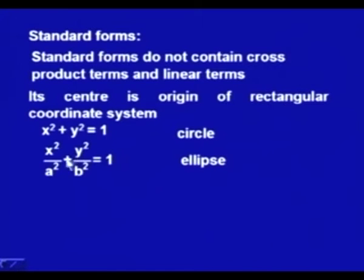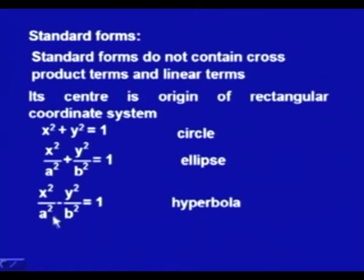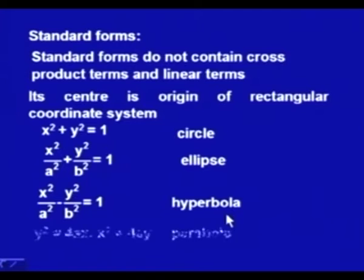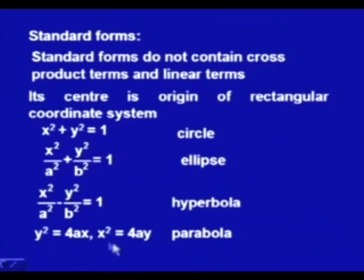Similarly, x²/a² + y²/b² = 1 represents an ellipse, free of cross terms and linear terms. Another form, x²/a² − y²/b² = 1, represents a hyperbola. And y² = 4ax or x² = 4ay represents a parabola.